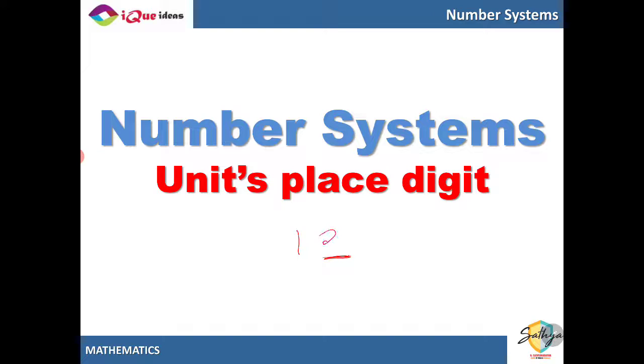As we all know, the units place digit is the extreme rightmost digit of any particular number. For the number 12 the rightmost digit is 2. So this is called the units place and 1 is in the tens place. For the number 257, 7 is units, 5 is tens and 2 is hundreds.